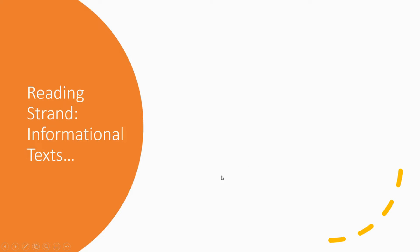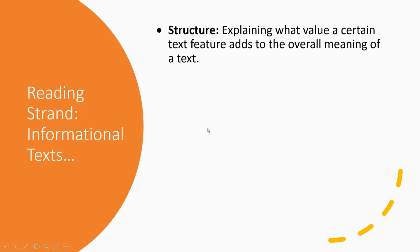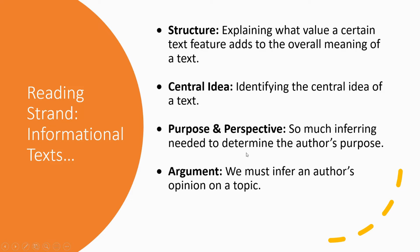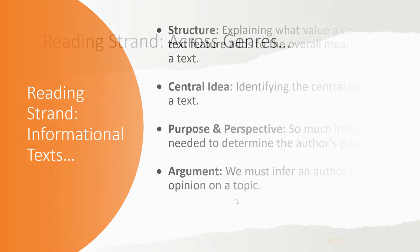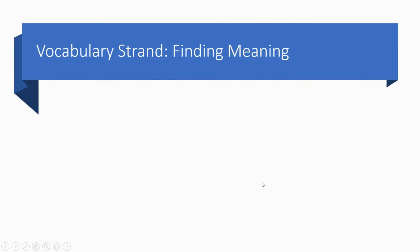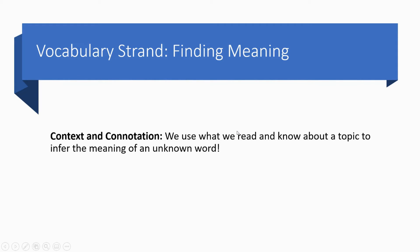Staying in the reading strand but heading over into the standard on informational text, again all four benchmarks can apply to inferring. We have to infer the structure and how the text features add to the meaning of the text, identifying the central idea, what is the author's purpose, and what is the author's stance on a certain topic. There is one benchmark that works perfectly under across genres, and that's figurative language — inferring is trying to figure out what isn't explicitly stated, and this works perfectly. Then we move into the vocabulary strand. Of course there's only one standard here, finding meaning, and context and connotation requires all kinds of inferencing skills. Use what we read and know about a topic to determine the meaning of an unknown word — that is inferencing.